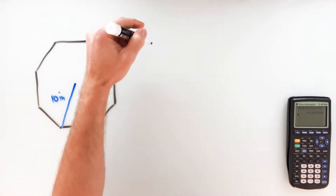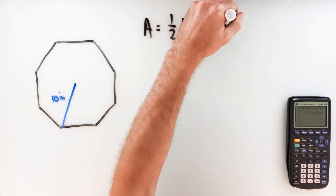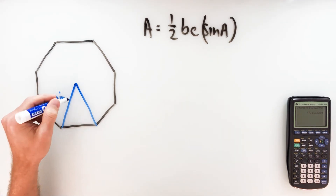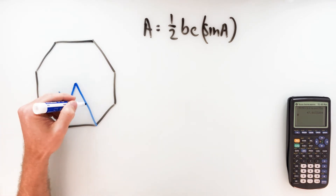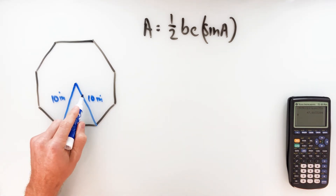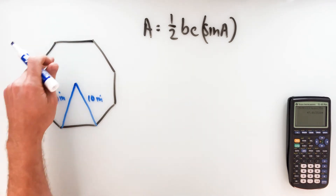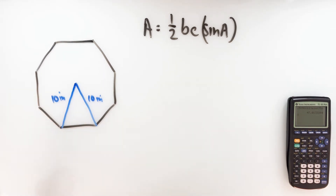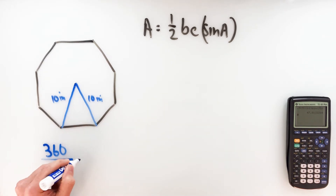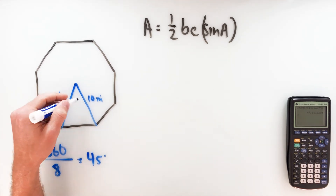Instead I'm going to utilize the triangle formula one half BC·sin(A). I'm going to use this triangle where I've got two sides of 10 inches — the radius is the same to any vertex. I can pretty quickly find the central angle. If I drew a radius to every vertex, I'd have eight congruent triangles and eight congruent central angles. To figure out the central angle: 360 divided by 8 is 45 degrees. So this angle right here is 45 degrees.